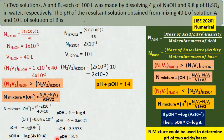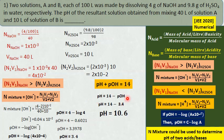pOH is known as 3.4. Substituting in pH + pOH = 14, pH = 14 minus pOH = 14 minus 3.4 = 10.6. The pH of this mixture is 10.6.